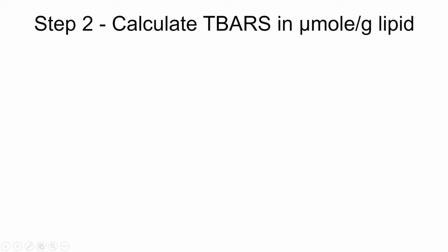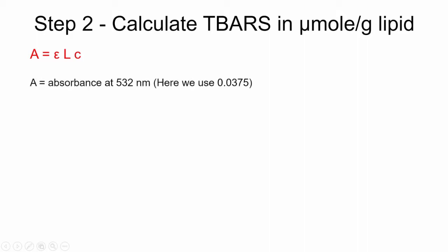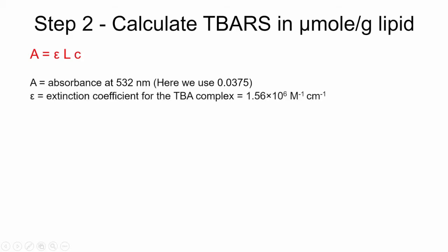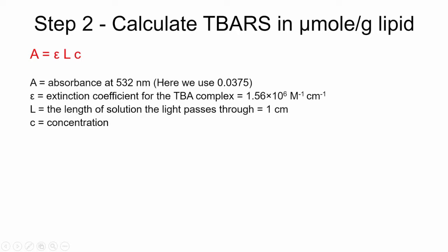Now you're ready to calculate the TBARS using the following equation. Known factors in this equation include A, which is the absorbance at 532 nanometers; epsilon, which is the extinction coefficient for the TBA complex; and l, which is the length of solution the light passes through. C is the concentration you need to determine. Rearrange your equation to solve for C.